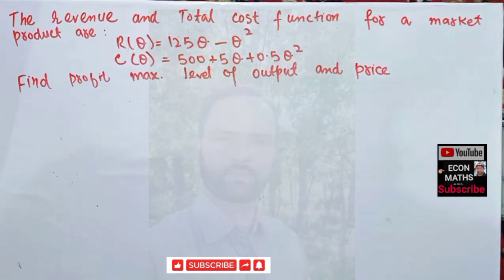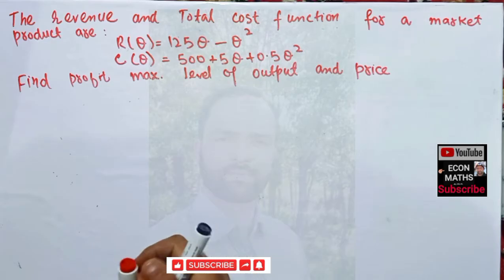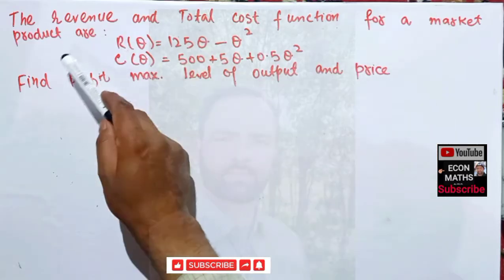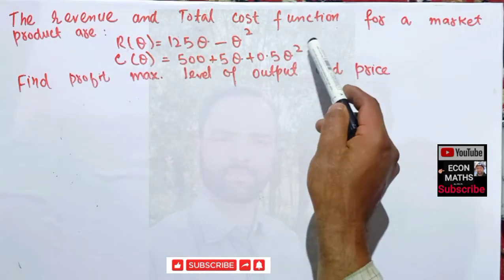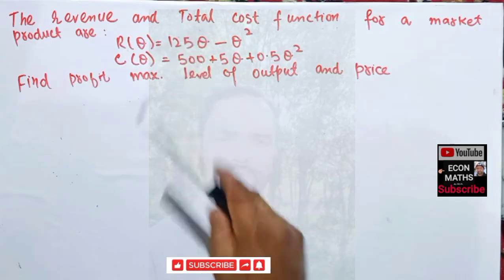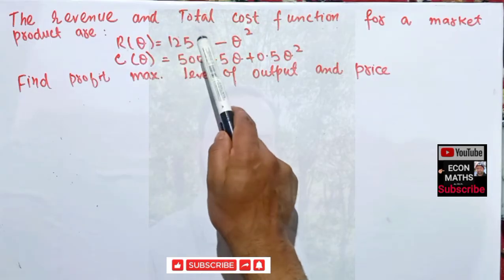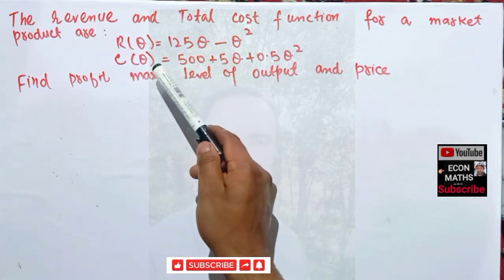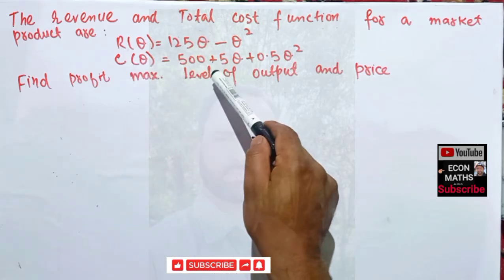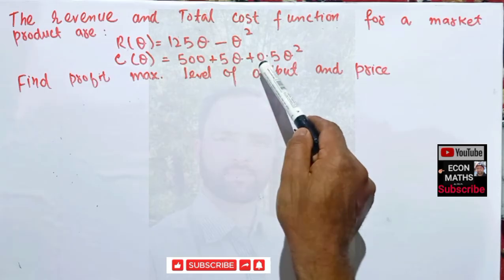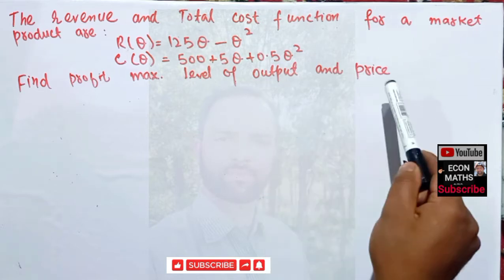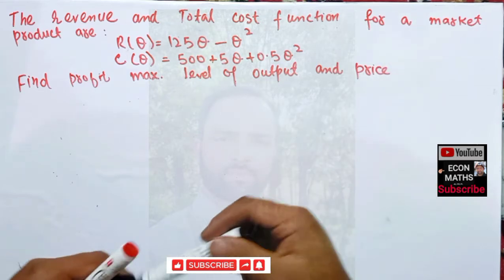In this video we will try to solve a question asked in the comment section. The question gives us the total revenue function as 125Q minus Q squared, where Q is the output, and the total cost function as 500 plus 5Q plus 0.5Q squared. We have to find the profit maximizing level of output and price.